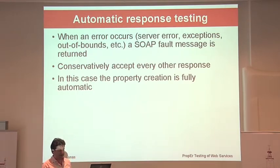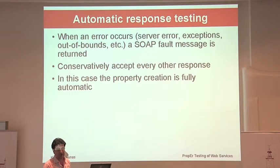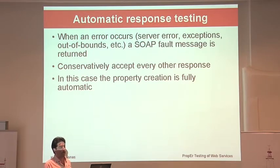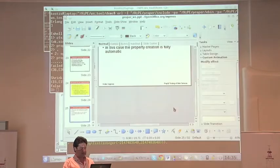For automatic response testing, we use the fact that when an error occurs, we get back a SOAP fault message. We recognize that and flag that the web service doesn't handle that input. Since you've written the types, this catches cases where operations don't handle all specified input types — something you couldn't find easily by hand. Any other response is conservatively accepted. The property creation is fully automatic here.